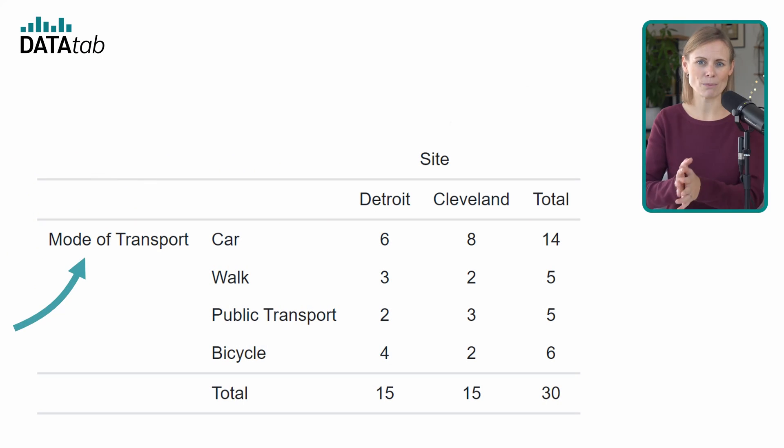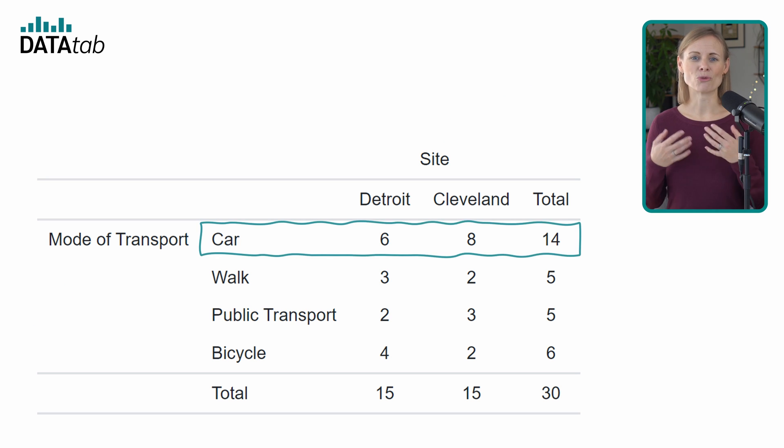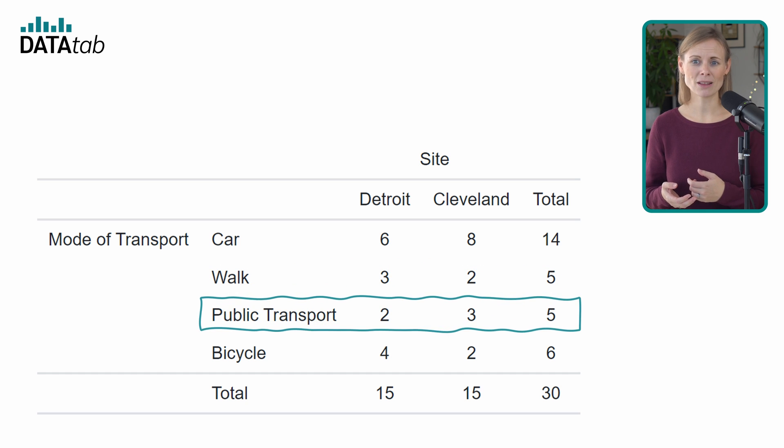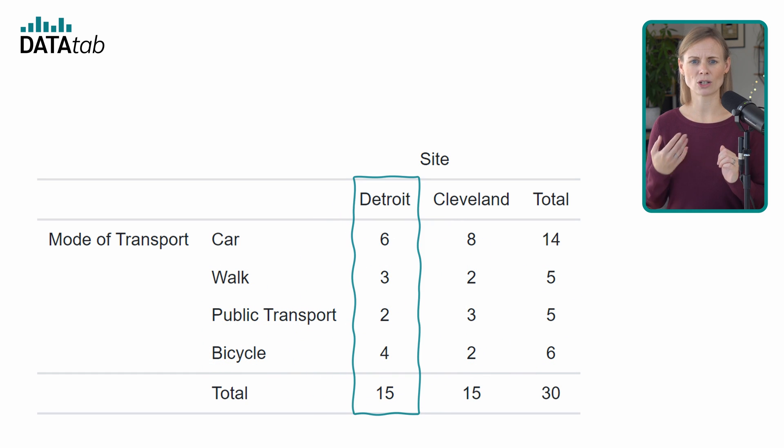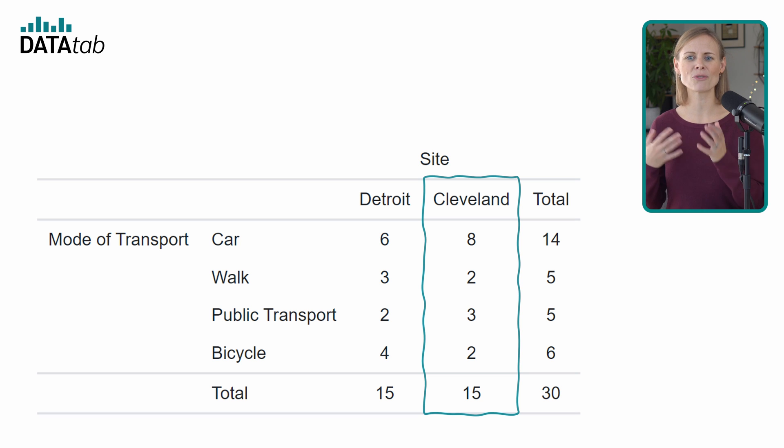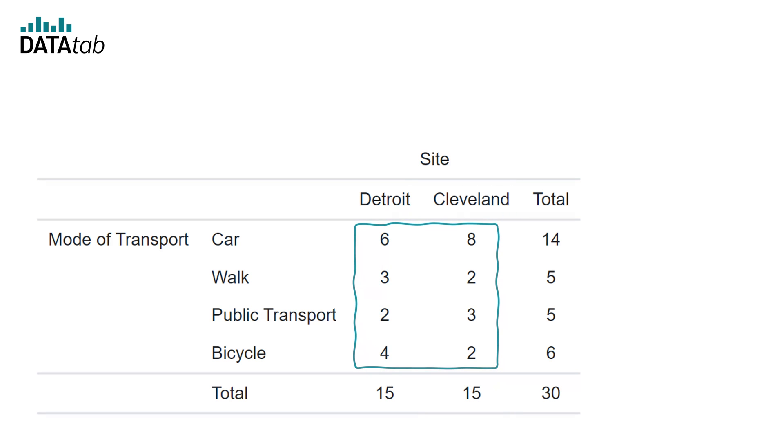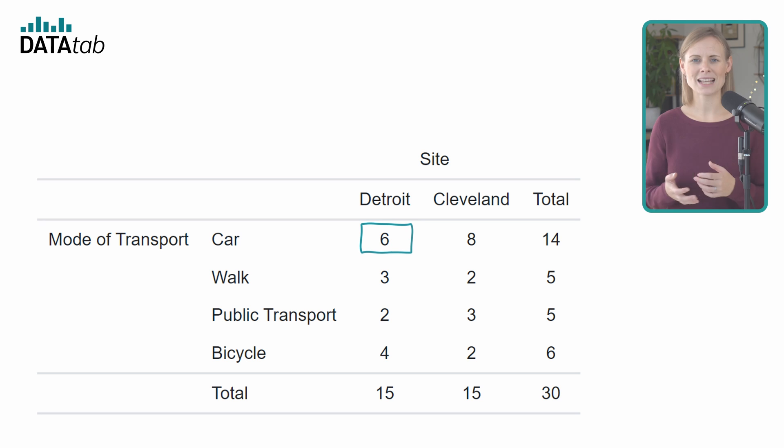If we want to display both values clearly, we can use a contingency table, also called crosstab. The rows of a contingency table represent the categories of one variable, while the columns represent the categories of another variable. Each cell in the table shows the number of observations that fall into the corresponding category combination. For example, the first cell shows that car and Detroit were answered six times.